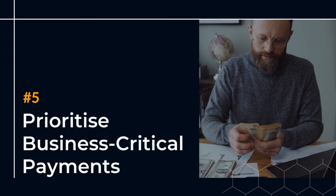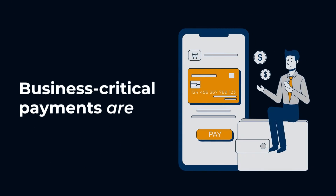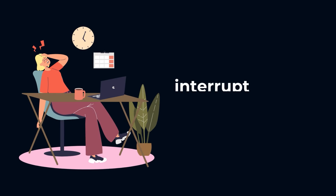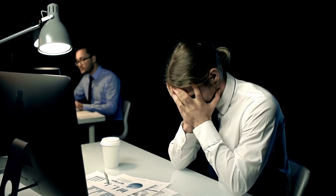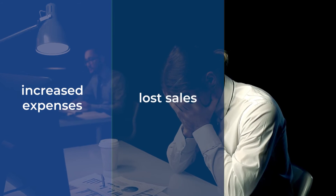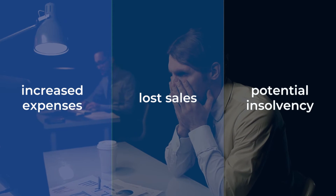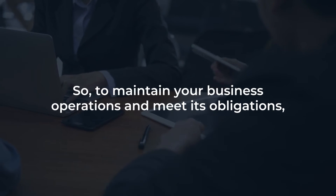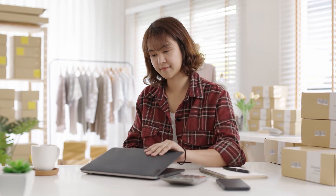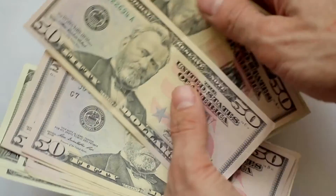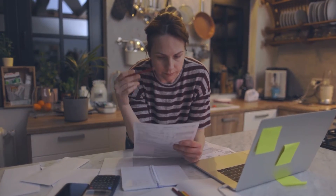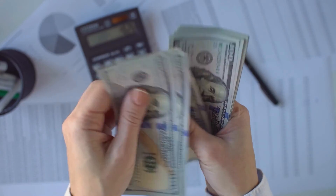Number 5: Prioritize business-critical payments. Business-critical payments are those that have the potential to interrupt or disrupt business operations. When these payments are not made on time, it can lead to increased expenses, lost sales, and even potential insolvency. So, to maintain your business operations and meet its obligations, you must know who to prioritize paying. For example, understand which supplier is business-critical and has flexible payment terms. Moreover, this is where your cash reserve also comes in handy. Budgeting your money ahead of time ensures that you have savings to cover greater payments later.